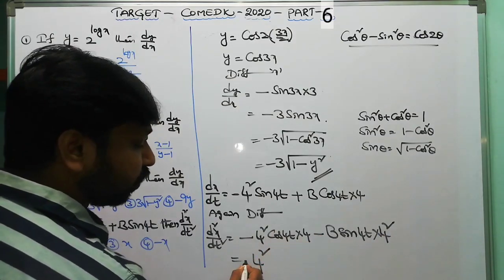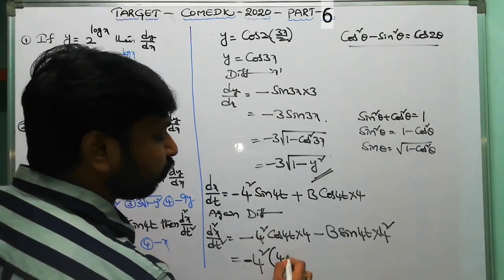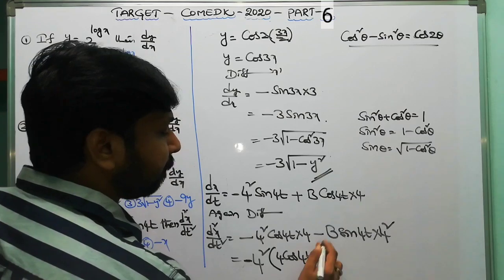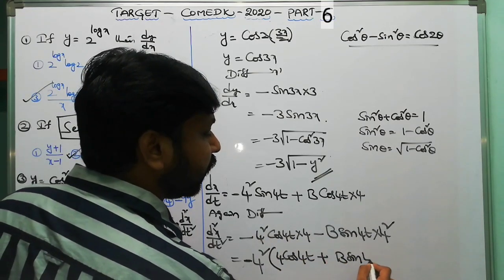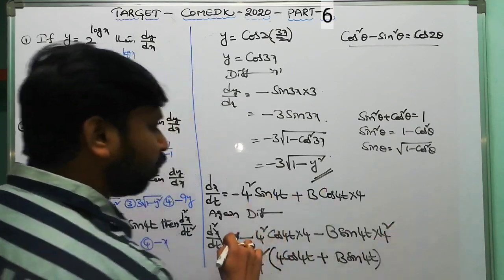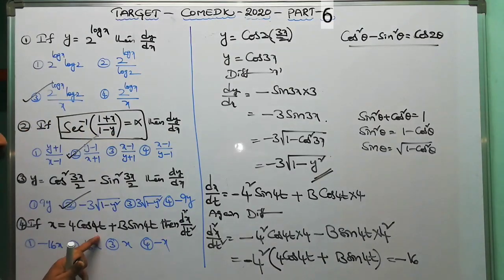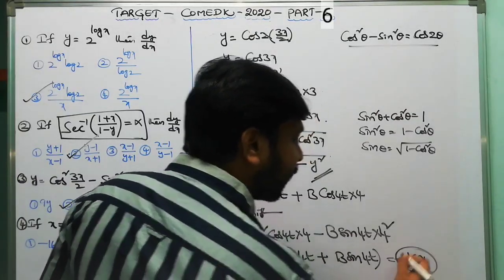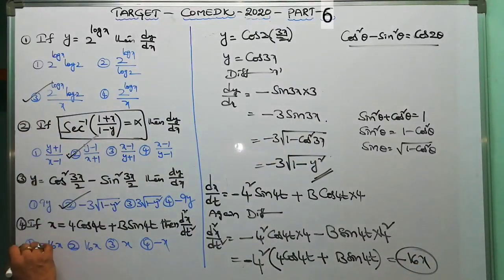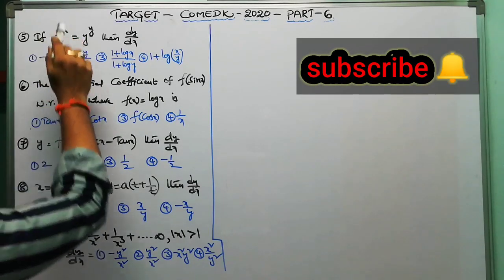Taking 4² (which is 16) as a common factor along with a negative sign, we get −16 times (a·cos(4t) + b·sin(4t)), which is nothing but −16x. So d²x/dt² equals −16x. The first option is the correct answer.